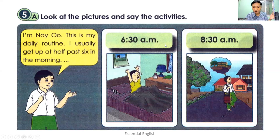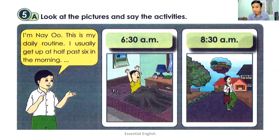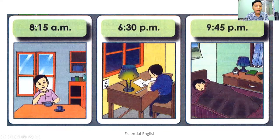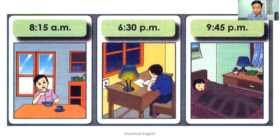For the first picture you can say: 'Hi, I'm Neu. This is my daily routine. I usually get up at half past six in the morning.' For the second picture: I always go to school at half past eight in the morning. At 8:15 A.M. he's having breakfast, so: I always have my breakfast at a quarter past eight in the morning.